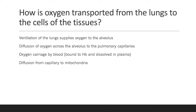Ventilation of the lungs supplies oxygen to the alveolus. Diffusion of oxygen then crosses the alveolus to the pulmonary capillaries. Oxygen is then carried by the blood, including oxygen that is bound to haemoglobin and oxygen that is dissolved in plasma. And finally, oxygen diffuses from the capillary to the mitochondria.